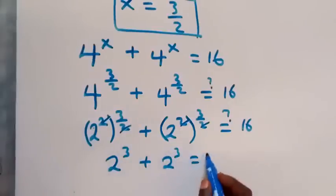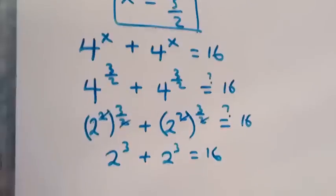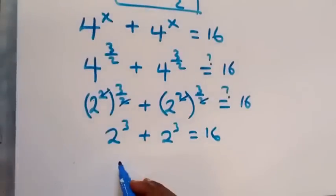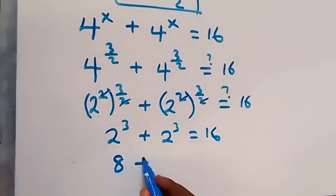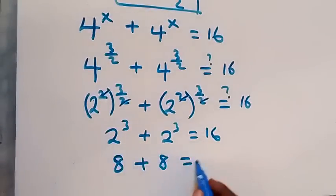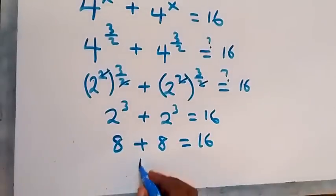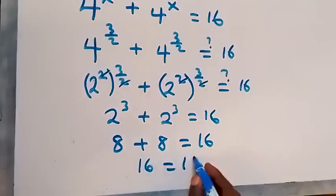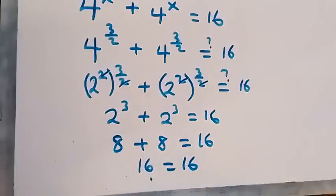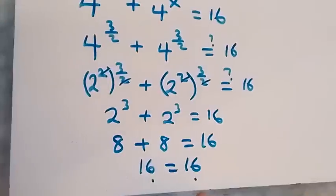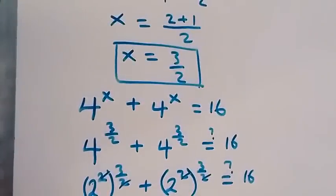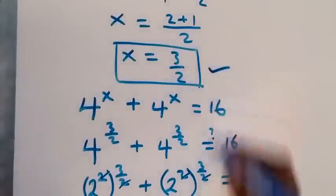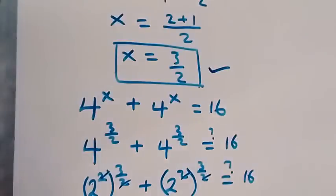2 raised to the power 3 is 2 times 2 times 2, which is 8. So 8 plus 8 equals 16 — and indeed 8 plus 8 is 16. We have 16 on the left-hand side equals 16 on the right-hand side. We can conclude that x equals 3 over 2 satisfies the given problem.